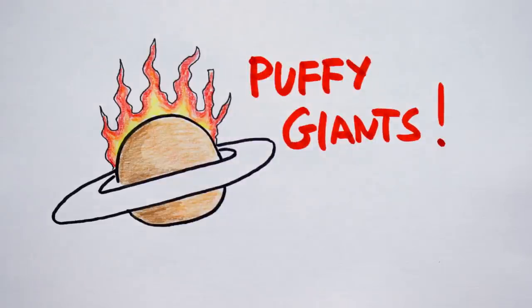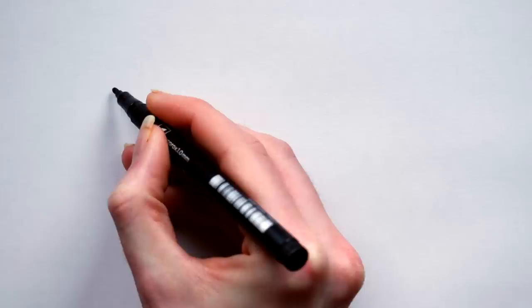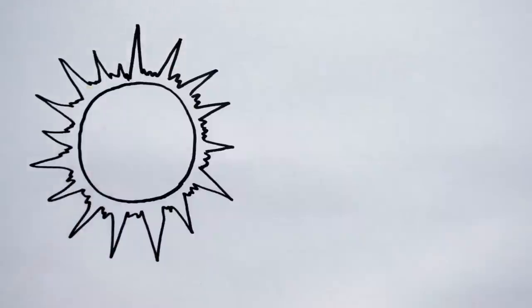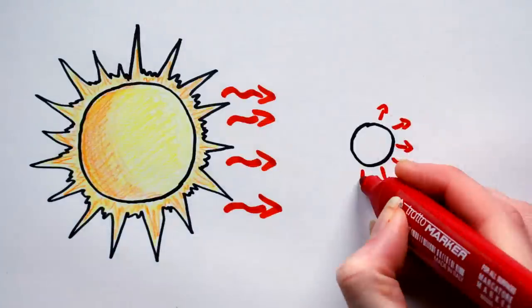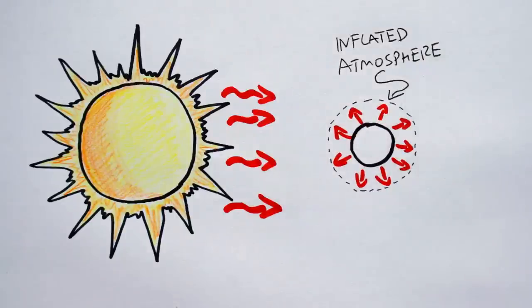We call them Puffy Giants. Puffy Giants are defined as being low density, large radius planets. Like hot Jupiters, Puffy Giants orbit close to their star, and as a result they have their atmospheres inflated by the star's heat, which gives them their puffy complexion.